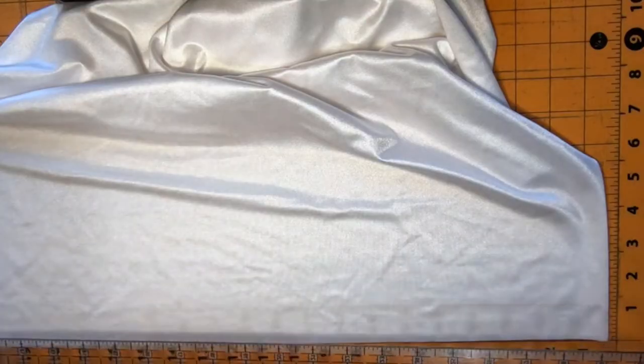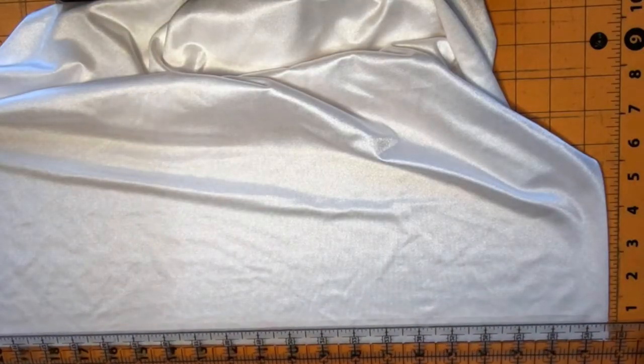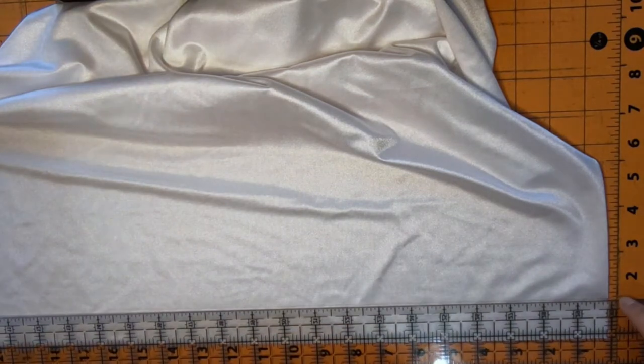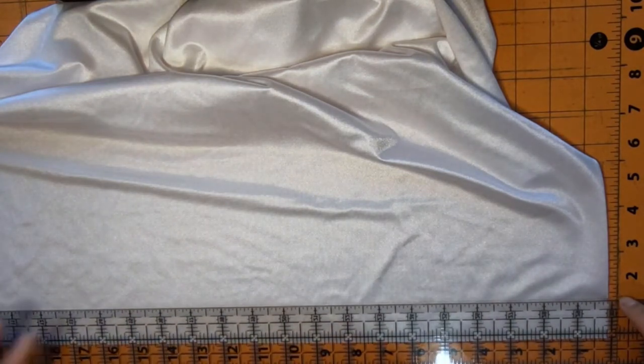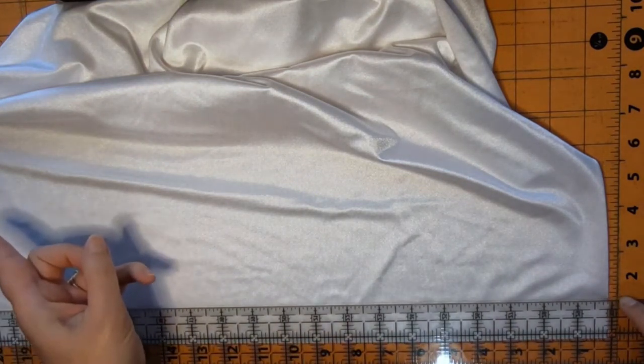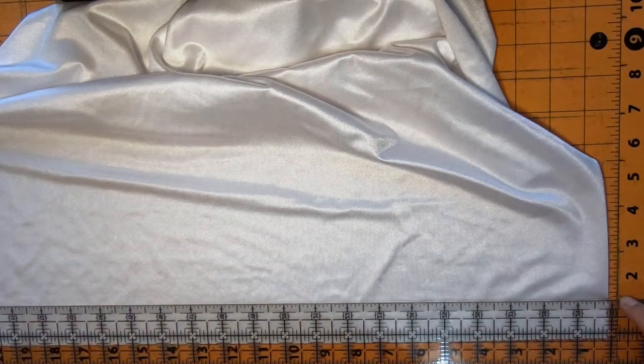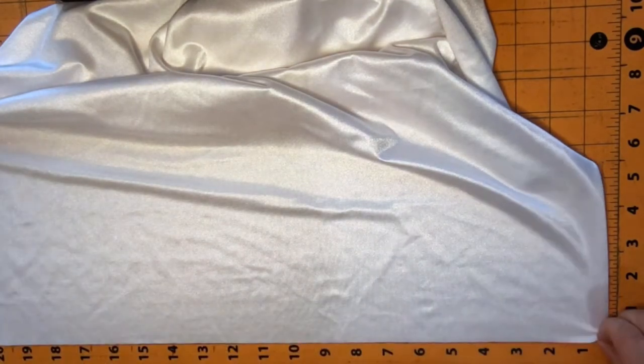I'm going to take my ruler and line it up on my first Sharpie mark on this side. I've also got Sharpie marks on the other side, and I'm going to line those up. Make sure it's all the way to the edge.